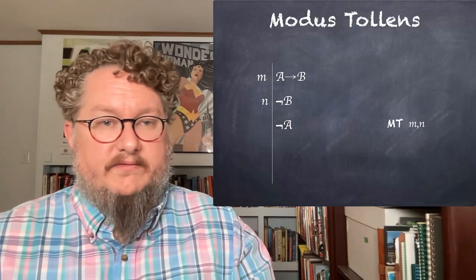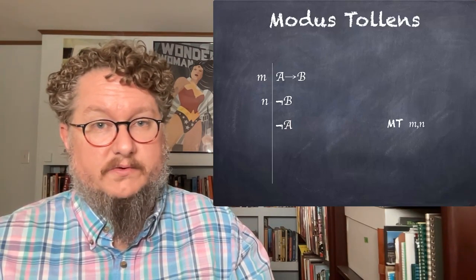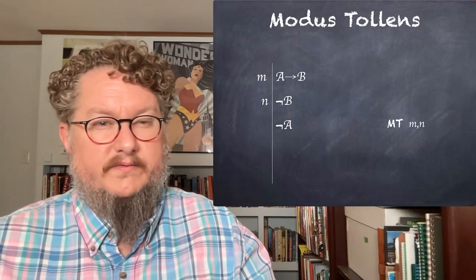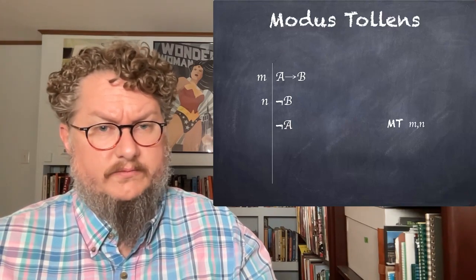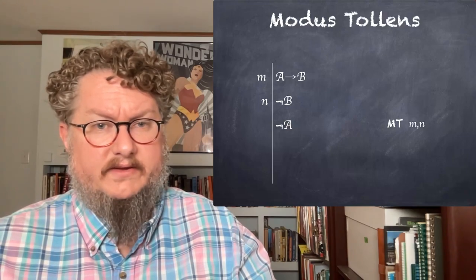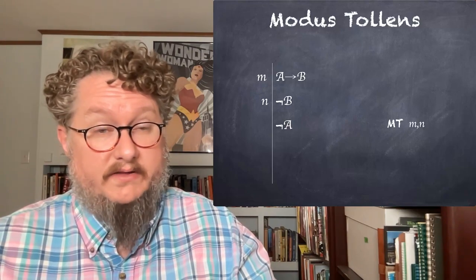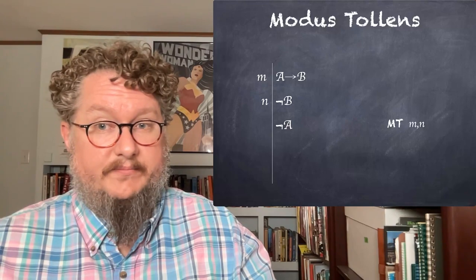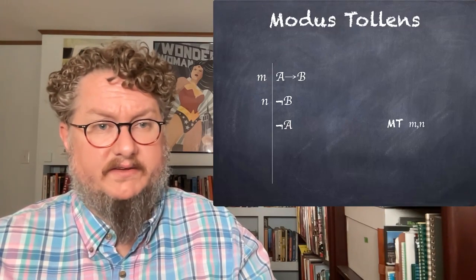The last derived rule, which is in some proof systems treated as a basic rule, is called modus tollens. And it is kind of the reverse of a conditional elimination rule. Instead of starting with the conditional and the antecedent, we start with the conditional and the negation of the consequent, and then we derive the negation of the antecedent. You'll actually have the opportunity to prove this one in one of the practice exercises in chapter six.